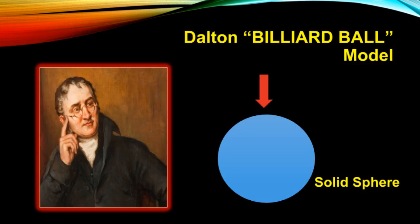Atoms are tiny, hard spheres that cannot be split up. The solid sphere model — also called the bowling ball model or billiard ball model — was proposed by John Dalton.